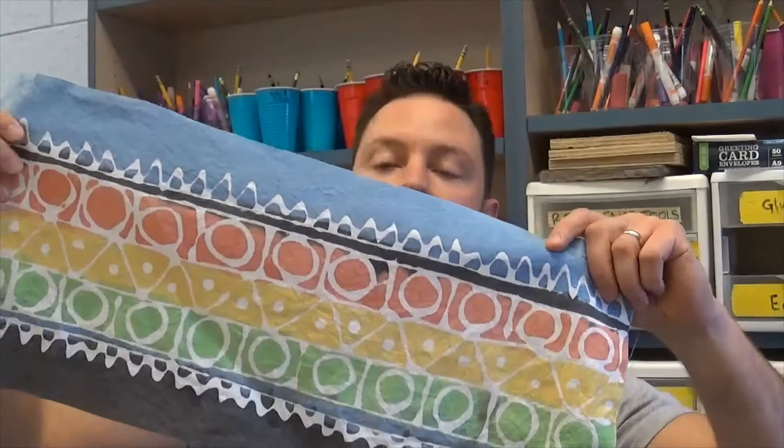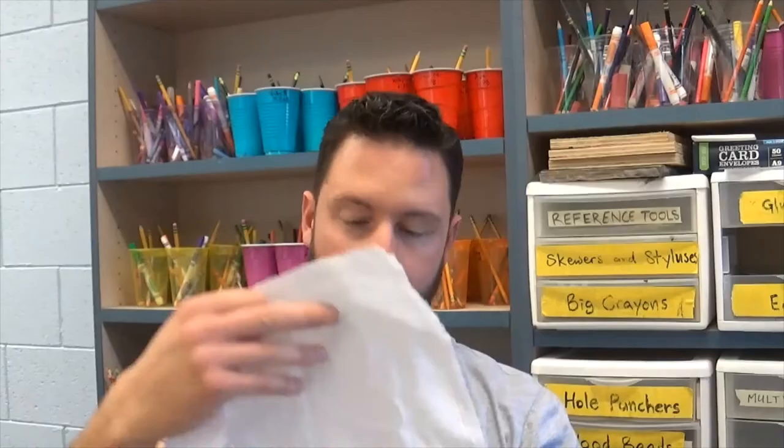Hi this is Mr. Wedge and today we're going to do a batik. It's like artwork on fabric and we're going to use a resist method. We're going to paint it next time but today we're just going to do the glue on the fabric.